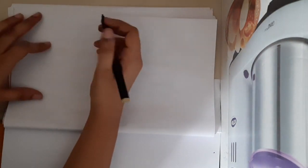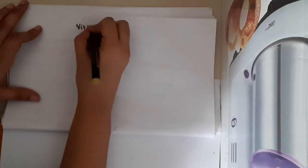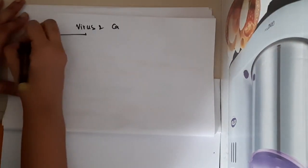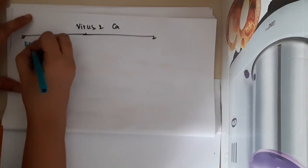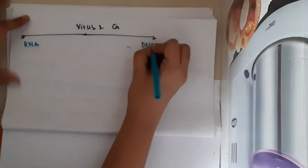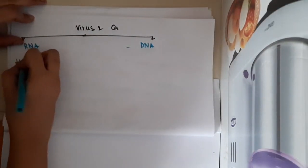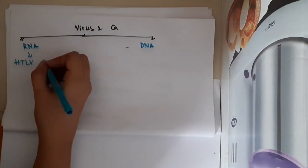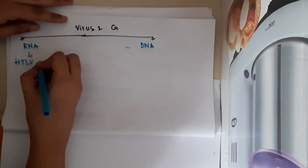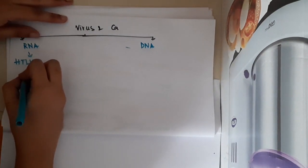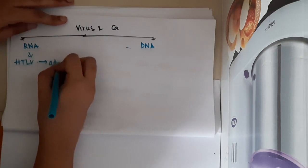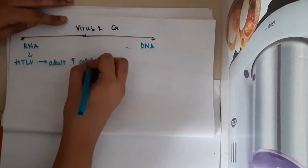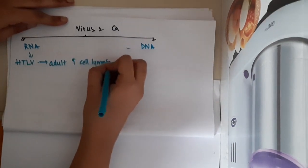Let us now learn about viruses and cancers. We have two types of viruses causing cancer: RNA viruses and DNA viruses. In RNA viruses, human T-cell lymphoma virus will result in adult T-cell lymphoma or leukemia.